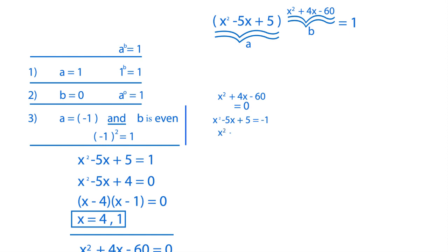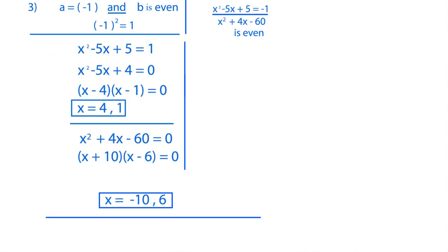So x squared minus 5x plus 5 is equal to negative 1. So x squared minus 5x plus 6 is equal to 0. So this factors to x, x, 3, 2, and minus, minus like that.